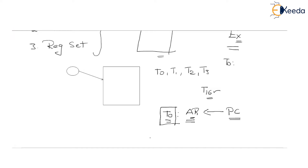The control unit has to initiate the control signals which activate the program counter and address register during T0. During the instruction cycle, there have to be three phases: fetch, decode, execution. During the fetch operation, the first operation performed is transferring the program counter value to the address register. The control unit's job is to activate the two registers participating in this transfer — one is the program counter and one more is the address register.